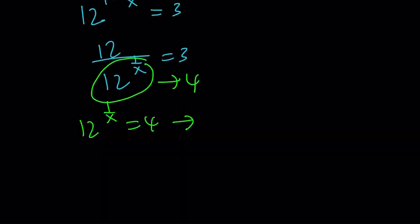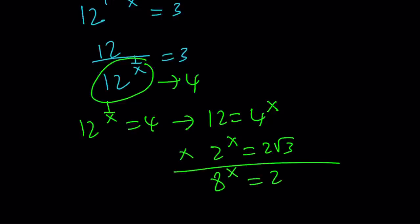From here, 12 becomes 4 to the power x if you raise both sides to the power x. And then from here, you proceed as before. So 2 to the x equals 2 root 3. And then you can multiply these. 8 to the x becomes 24 root 3. So the answer is 24 root 3.